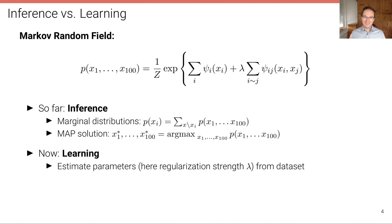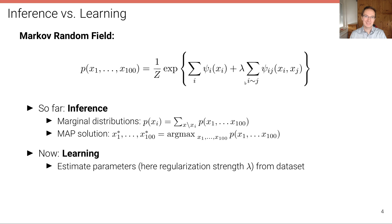In this lecture we're going to talk about the learning problem: how can we estimate the parameters? In this example there's just one parameter lambda, but we could have more. So how can we estimate lambda from a dataset?